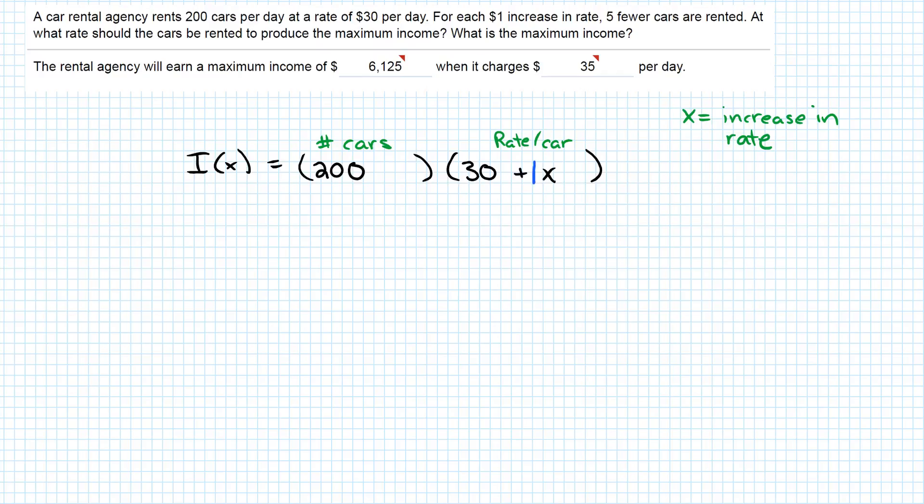I'm going to take away the 1 because it just confuses things a little bit. Every time they increase the rate, they rent 5 fewer cars. So my number of cars is going to be minus 5 cars for every increase in the rate. That's the function I need to work with.